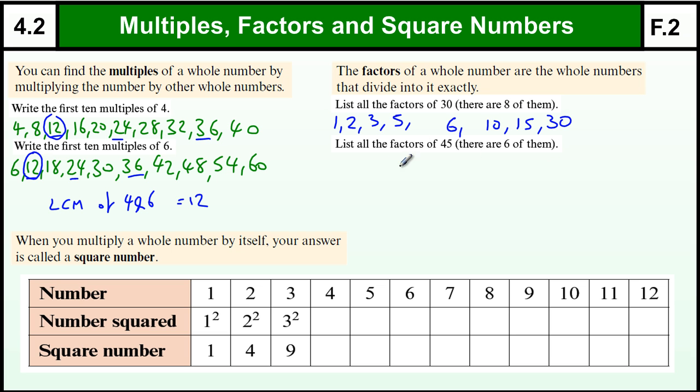All the factors of 45: again we start with 1 and 45, and then we work through our times tables. 2 doesn't go into 45, 3 does 15 times. It's quite a tricky one. 4 doesn't because it's an odd number. 5 is the next one, and 5 nines are 45.